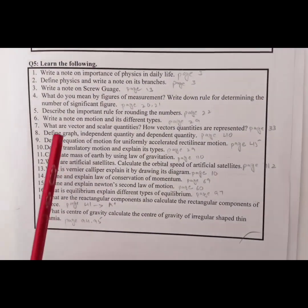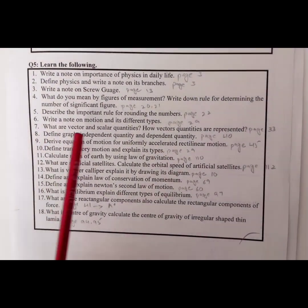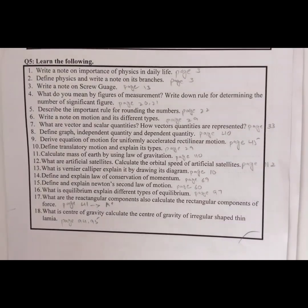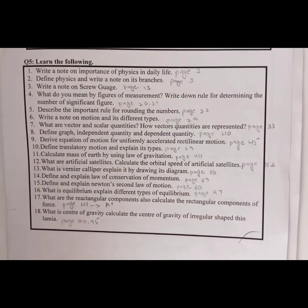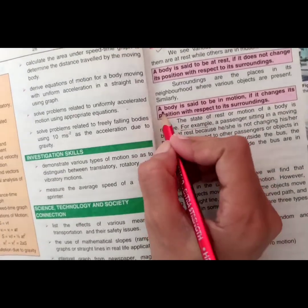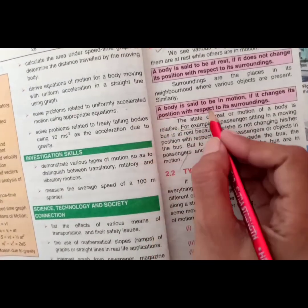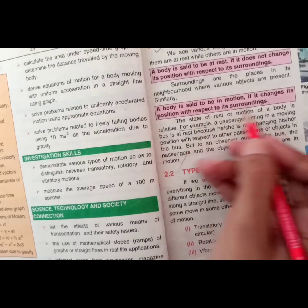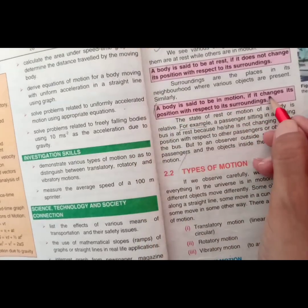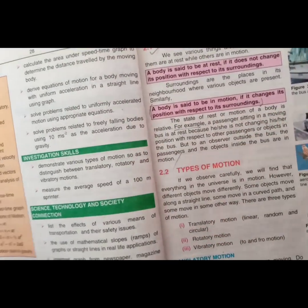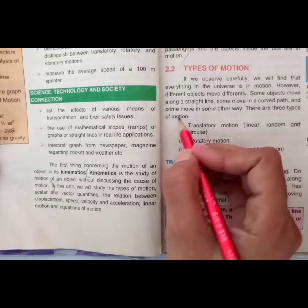Now we will move to question number 6: write a note on motion and its different types. Open up page number 29. A body is said to be in motion if it changes its position with respect to its surroundings. This is the definition of motion and here we have some types of motion.